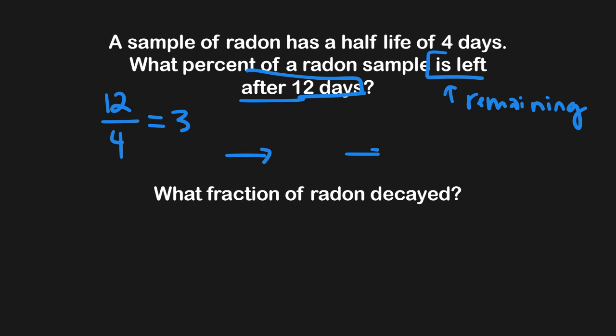We draw out our three arrows. Since we haven't been given an overall starting amount but are asked about percent, we always start with 100%. After the first half-life it's 50% remaining, then 25% remaining, and after 25% in the next half-life we'll only have 12.5% of the original sample remaining. So if they ask for a percent, you just always start with 100% and halve just like you would with a normal sample.